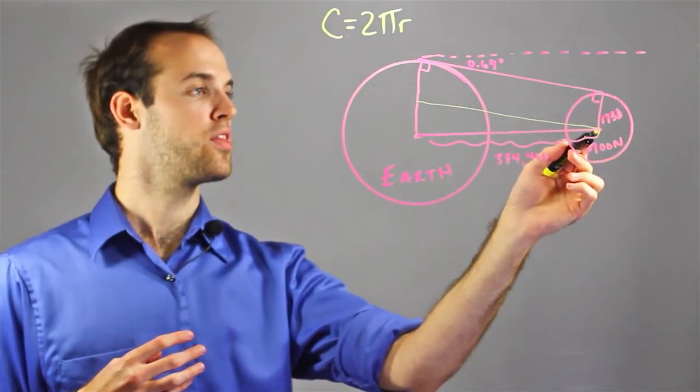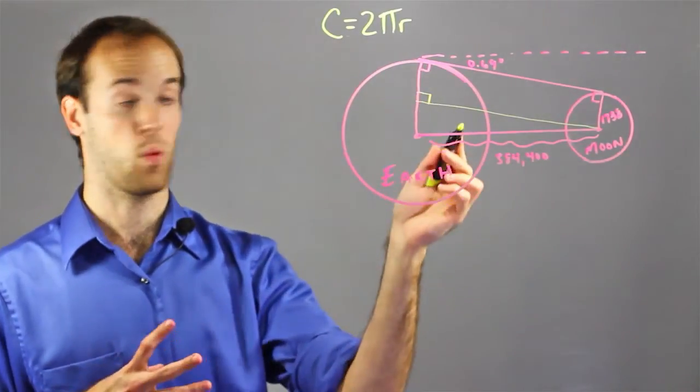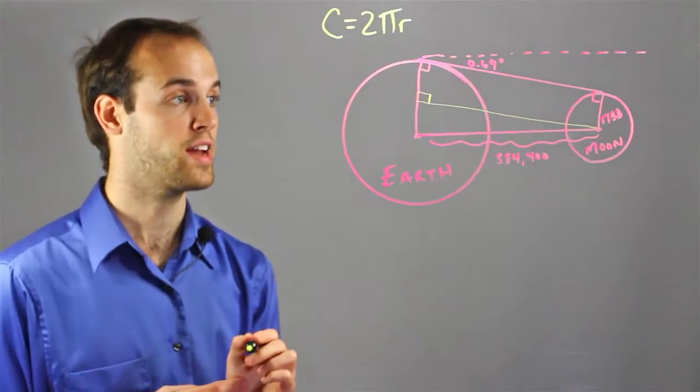And if I draw this from the center of the Moon so that it's perpendicular to the Earth's radius, instead of that weird shape I was talking about, I now have a rectangle and a right triangle.